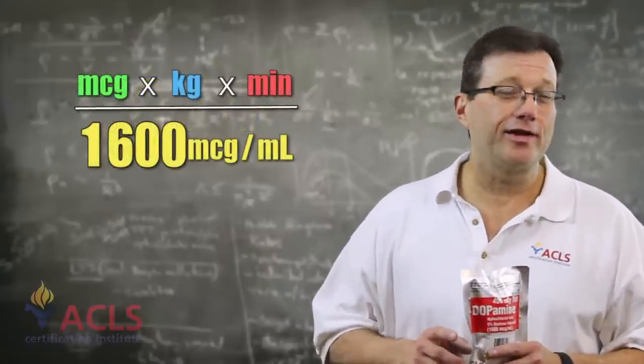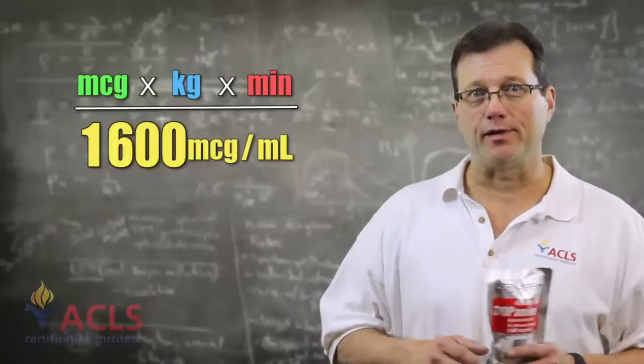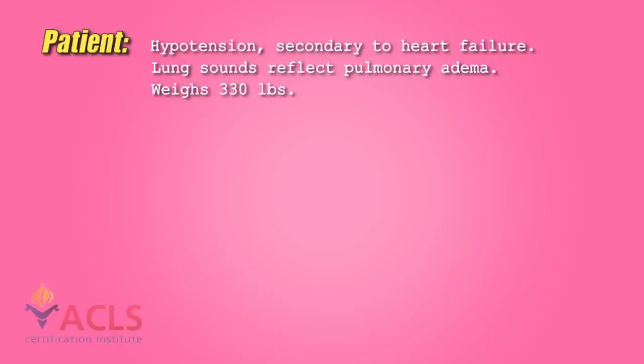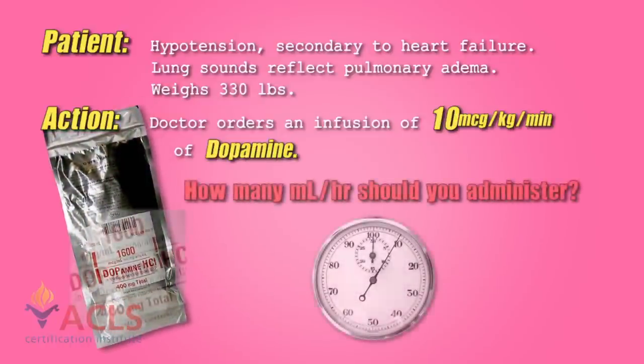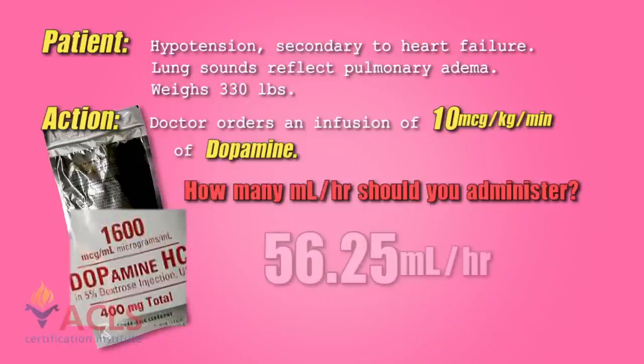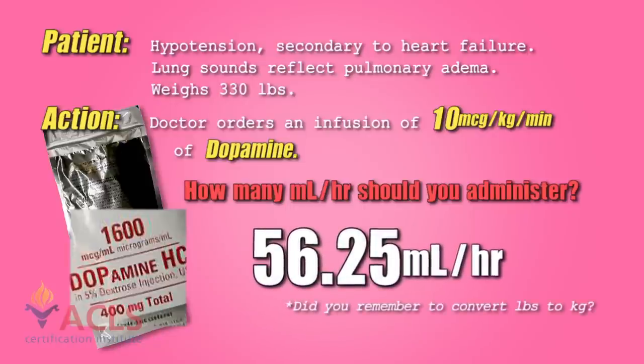Here's a nifty little trick: if the drug isn't weight-based and is just per minute, take the weight component out — same formula otherwise. Using this method, let's calculate some different dopamine drips. I'll give you a dosing parameter from the doctor — pause the video if you need to while you're working on your answer.